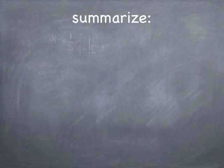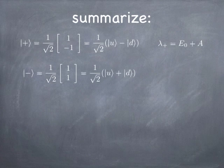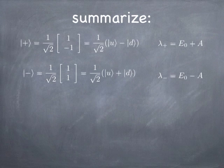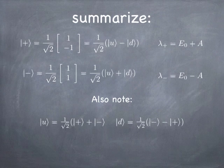To summarize the ammonia results: we found two eigenvectors, |+⟩ with eigenvalue E₀ + A and |−⟩ with eigenvalue E₀ − A. The plus state goes like the difference of up and down; the minus state goes like the sum. Conversely, if you add plus and minus you get something that looks like up, and if you subtract them you get something like down—so up and down can also be expressed as superpositions of plus and minus. It's a nice playground for understanding how these postulates work.